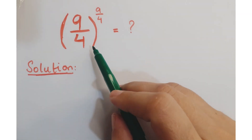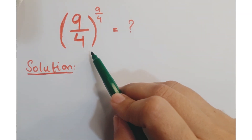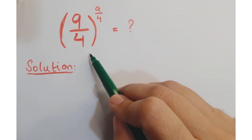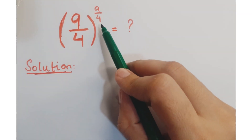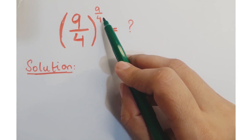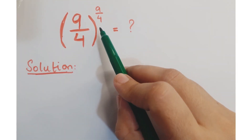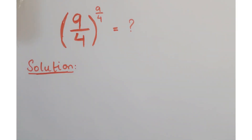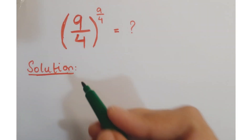Hi guys, look at this question. The question is 9 upon 4 whole to the power 9 upon 4, and we have to simplify it.